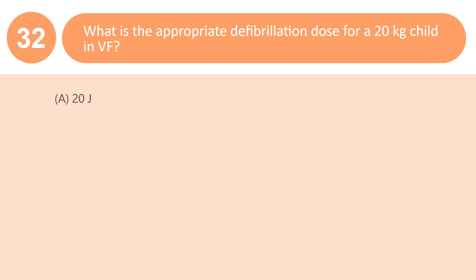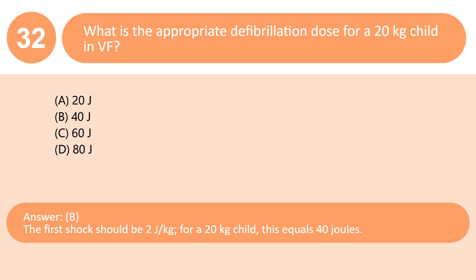What is the appropriate defibrillation dose for a 20 kg child in VF? A. 20 J. B. 40 J. C. 60 J. D. 80 J. Answer: B. The first shock should be 2 J/kg; for a 20 kg child, this equals 40 joules.